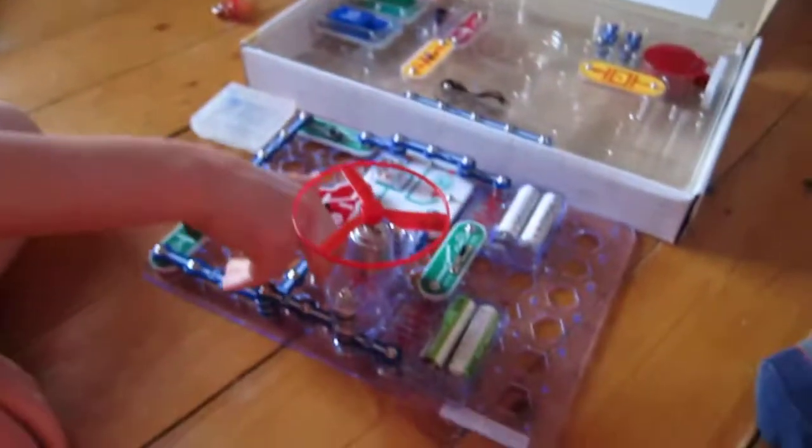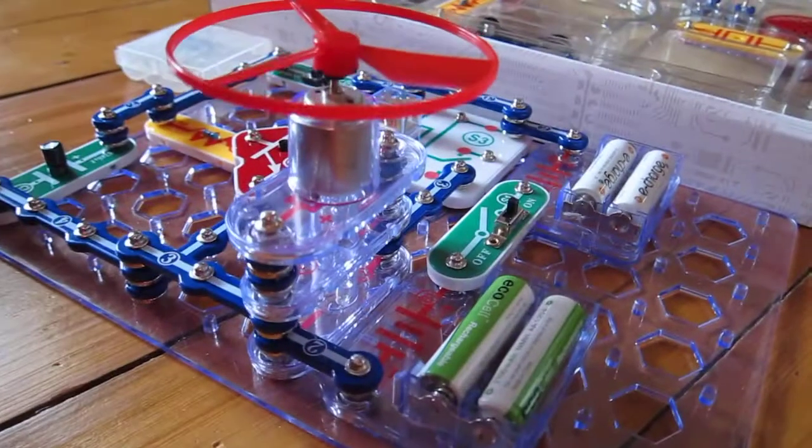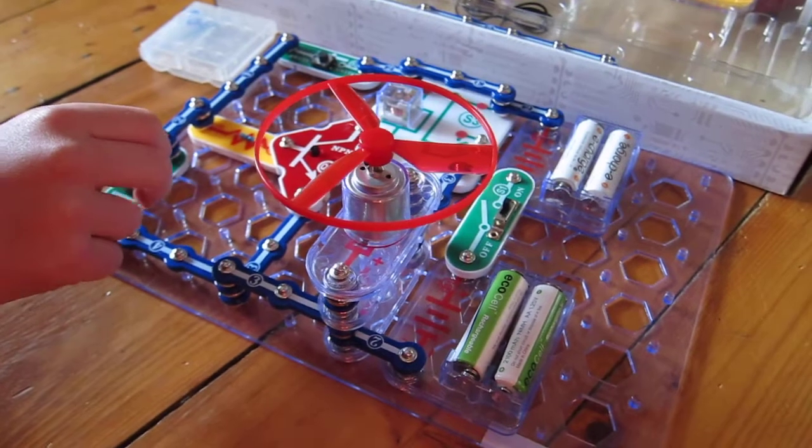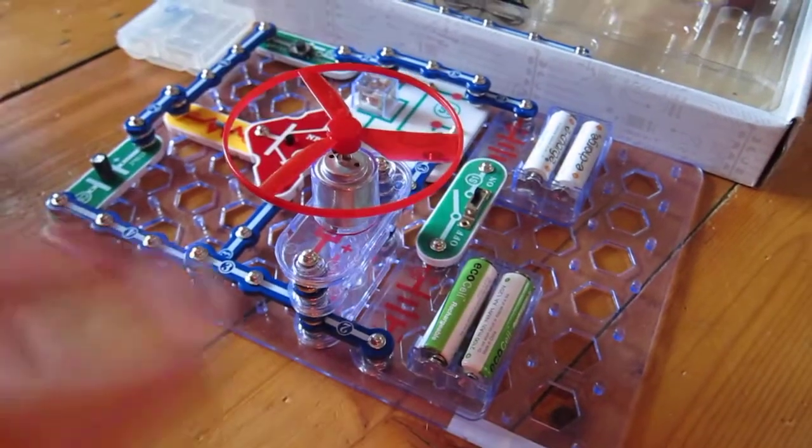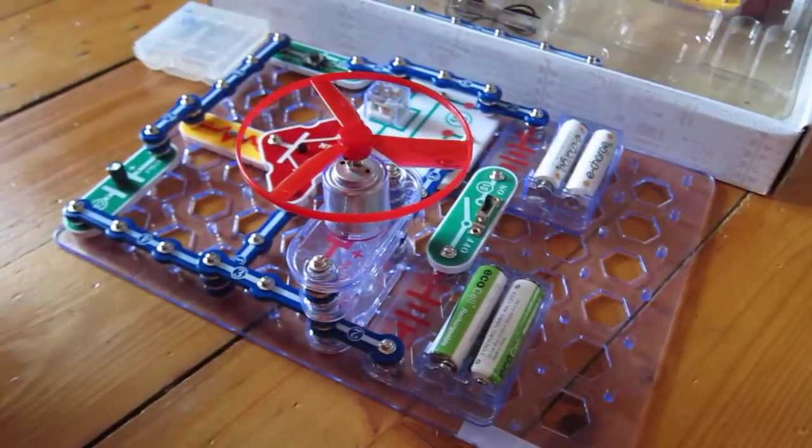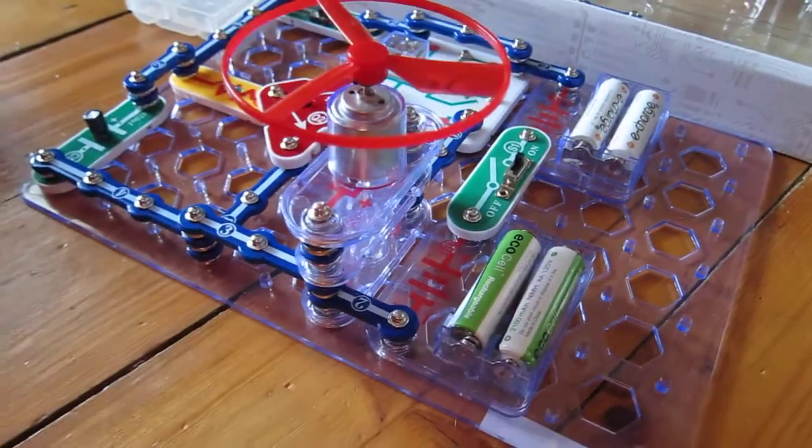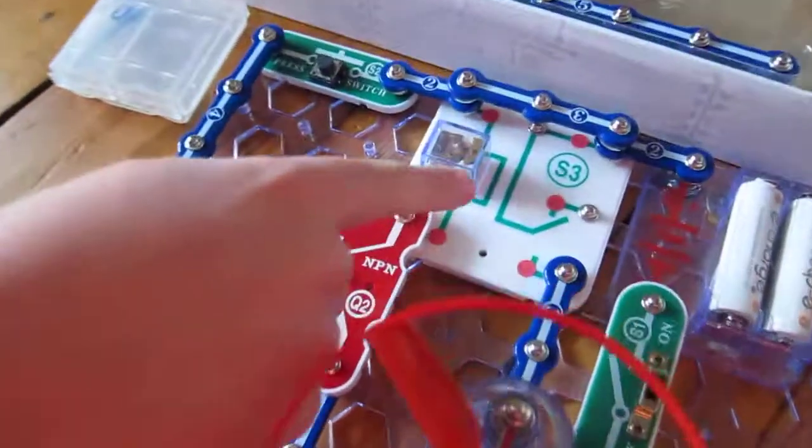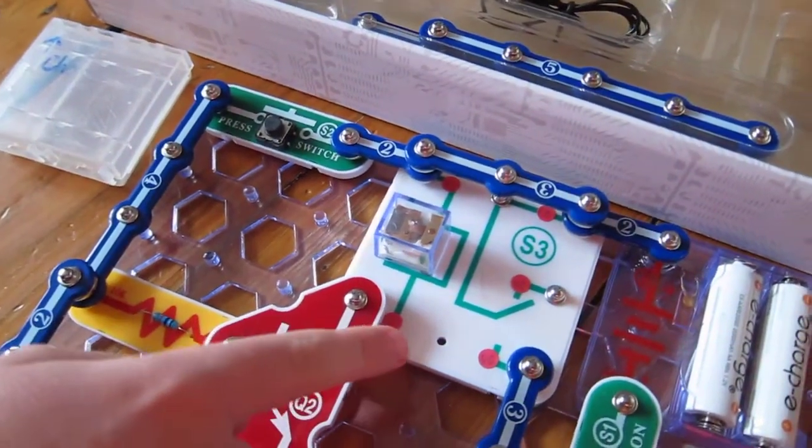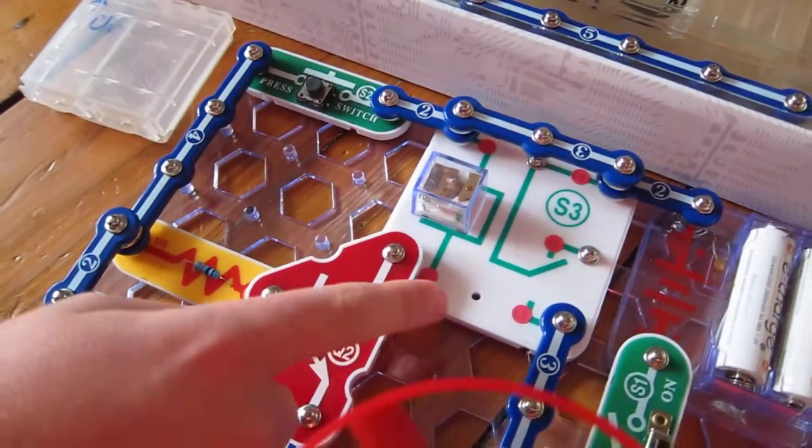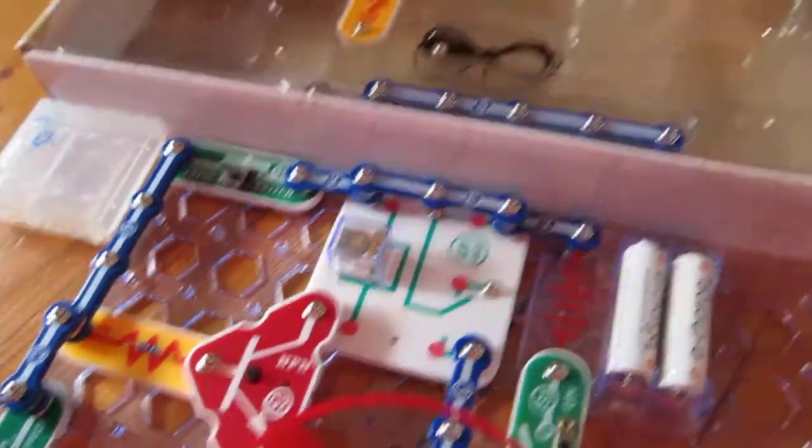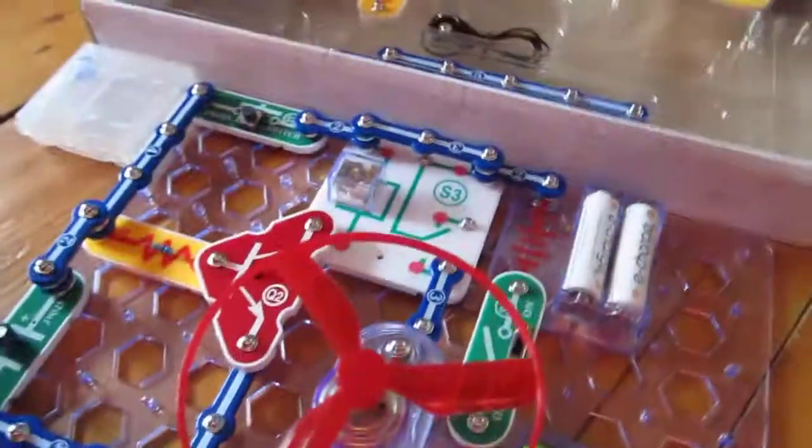And then the APN times it. The instructions called for it anyway. And you won't be able to build this with just Snap Circuits Junior, but it's possible to make it with the extra packs.